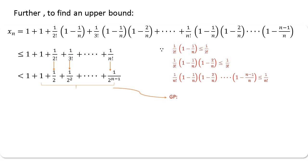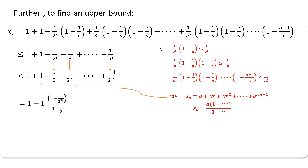Now, just by leaving the first term, consider the remaining terms. They are in the form of a geometric progression — specifically, the sum of first n terms of a GP. Recall the standard formula: Sn = a(1 − r^n)/(1 − r). Using this, the remaining GP part can be written in standard form. Here, a = 1/2, so after simplification you get a closed form.